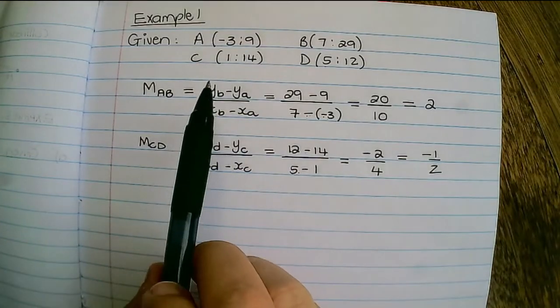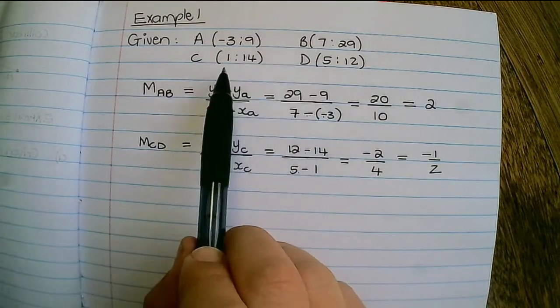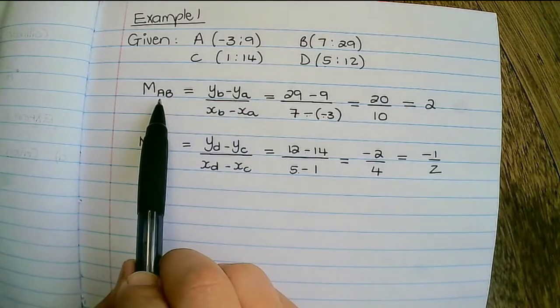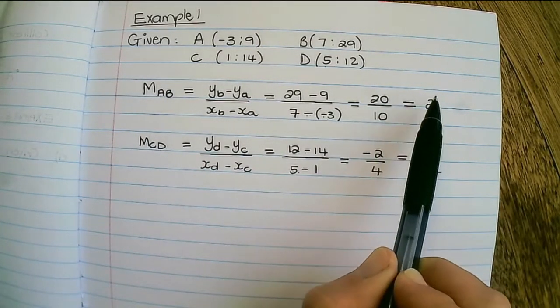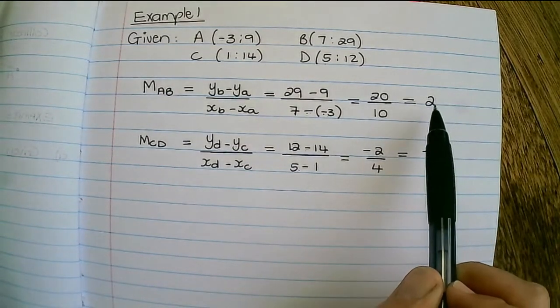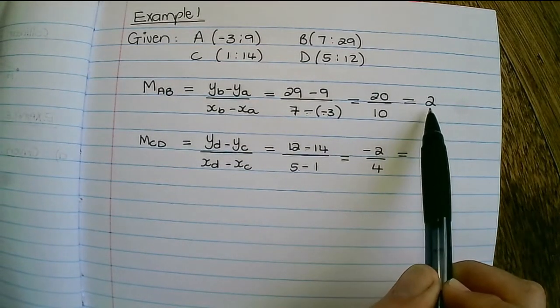So without drawing these lines or these coordinates, I can see that the line AB would be increasing, meaning upwards, because its gradient is equal to 2, which is positive.